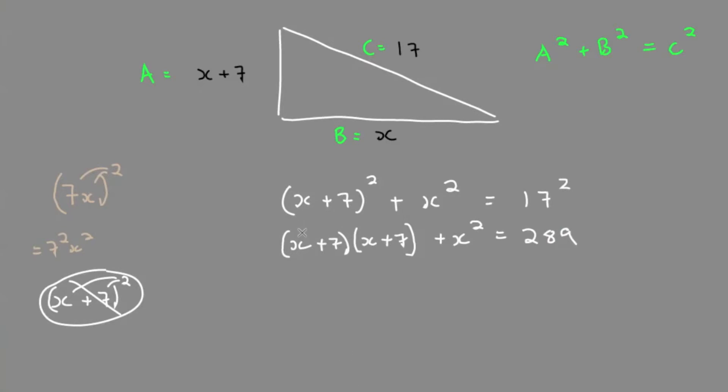When we FOIL, remember FOIL stands for First, Outside, Inside, Last. So we're multiplying the firsts, the outsides, the insides, and the lasts. So we get x squared plus 7x plus 7x plus 49, plus x squared.